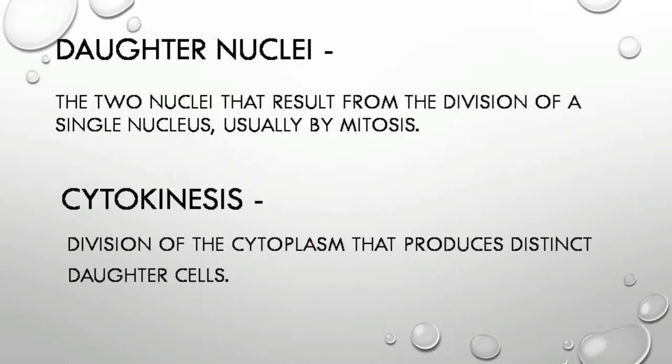Daughter nuclei: the two nuclei that result from the division of a single nucleus, usually by mitosis. Cytokinesis: the division of the cytoplasm that produces distinct daughter cells.